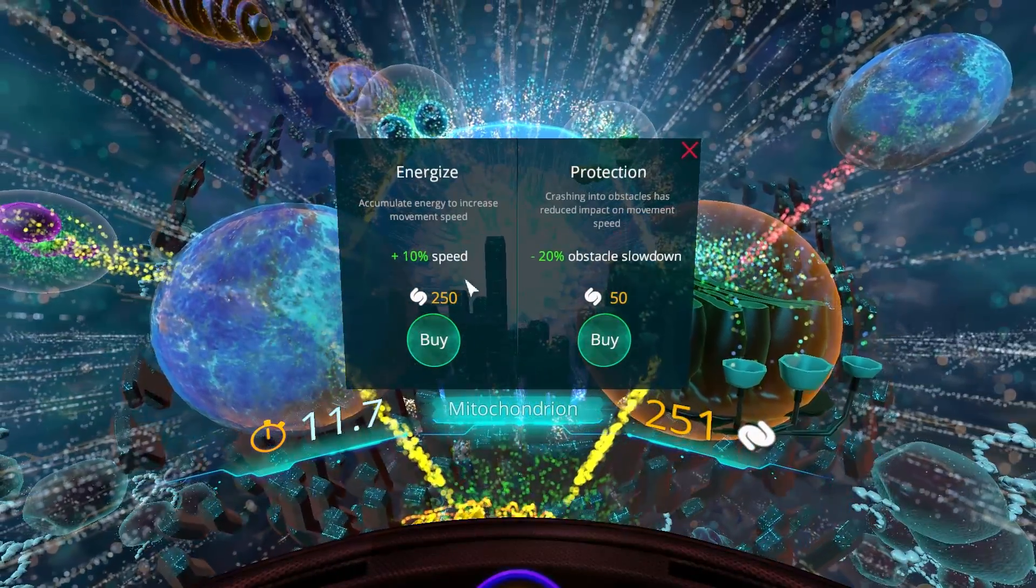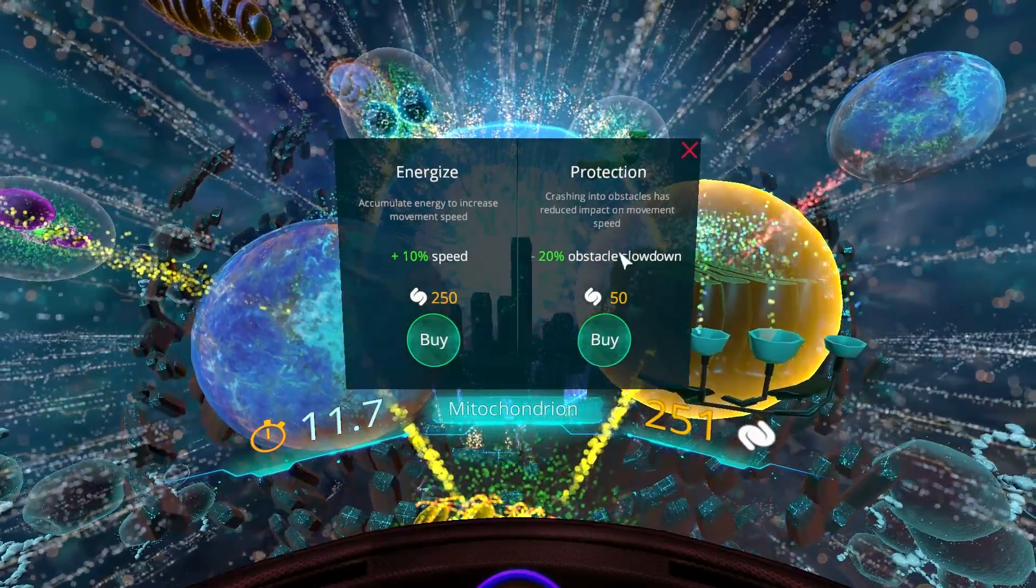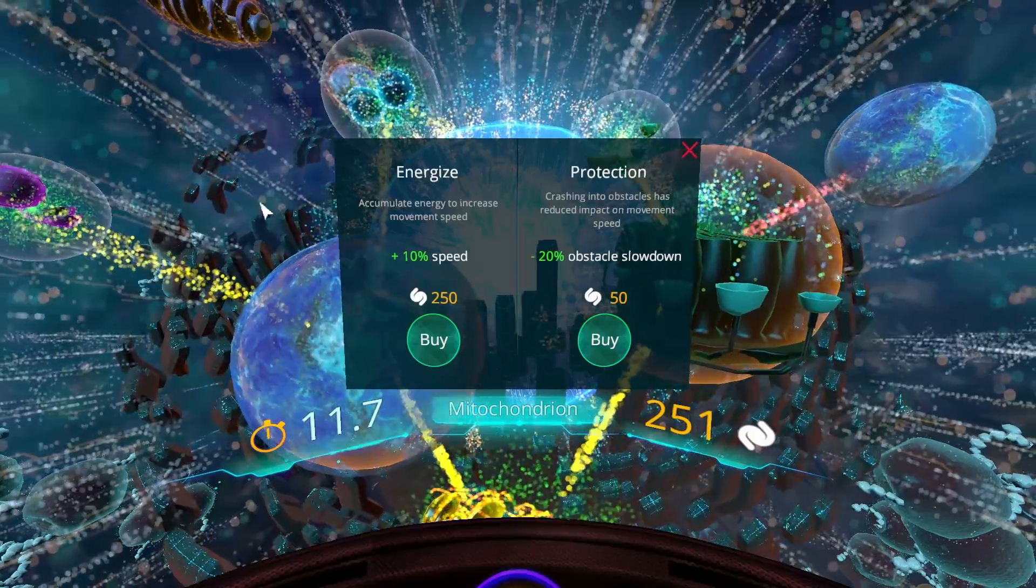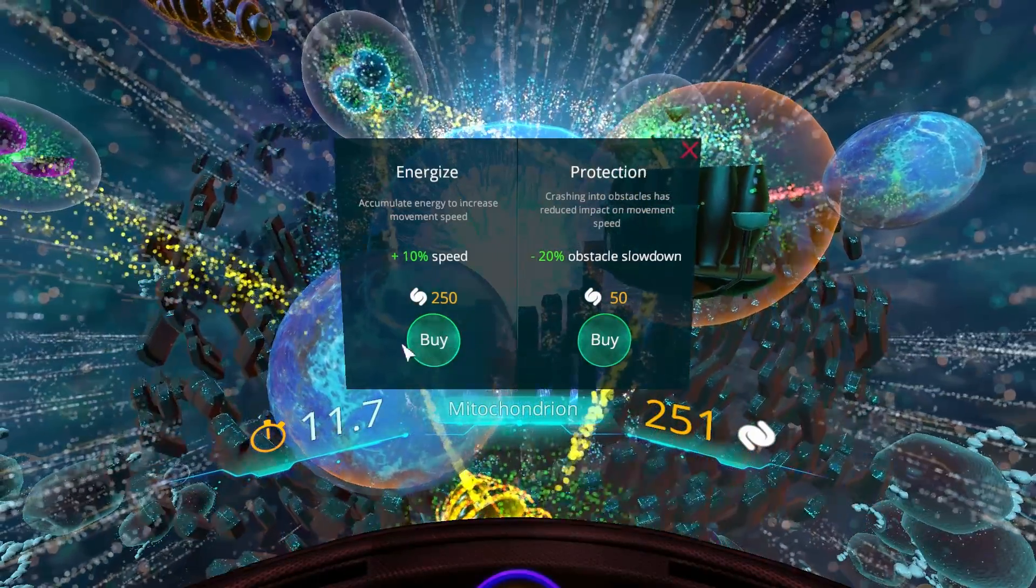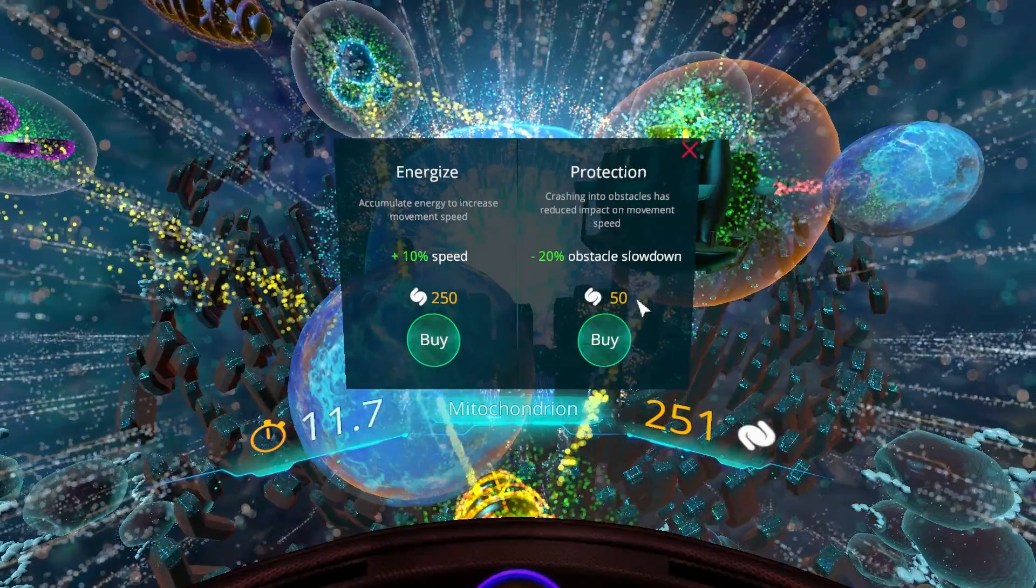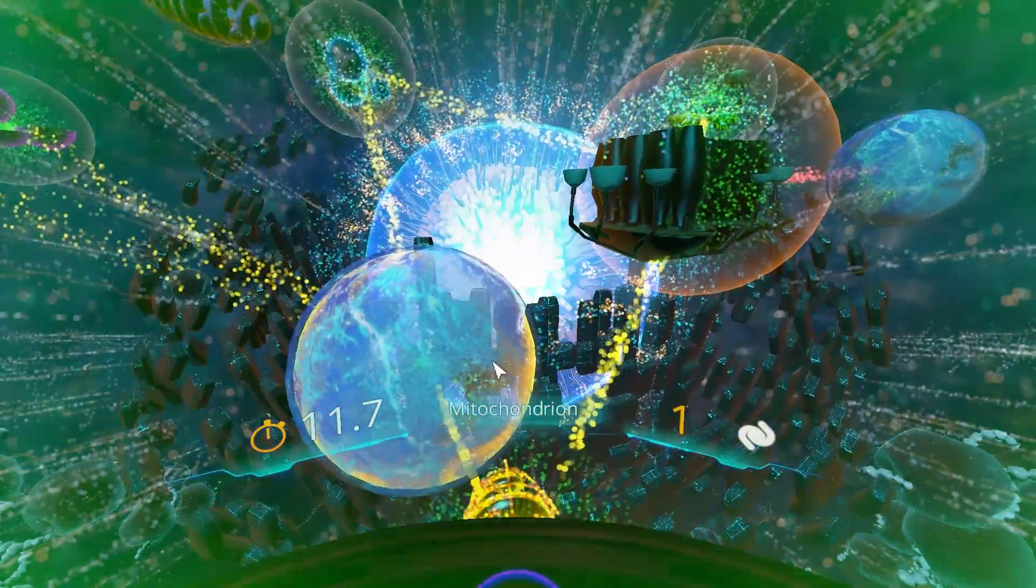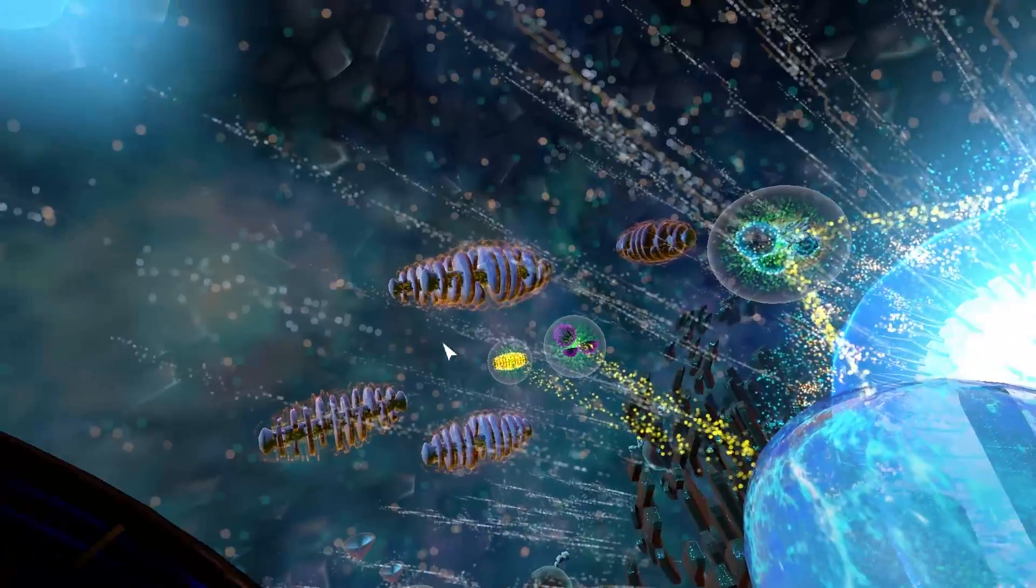So once you progress through this game and unlock all the organelles, you'll get to learn what they do and apply your knowledge by basically selling this protein to get either more speed or less slowdowns and so on. This is how this game works in natural.